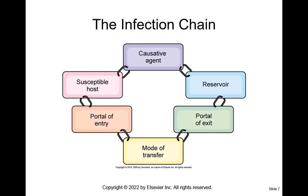The second link is the reservoir — where the microorganisms can be found. The reservoir can be an infected wound, human or animal waste, insects, rodents, contaminated food or water, or a person with the infection. To prevent infection at the reservoir, good hand hygiene and sterile technique are essential.